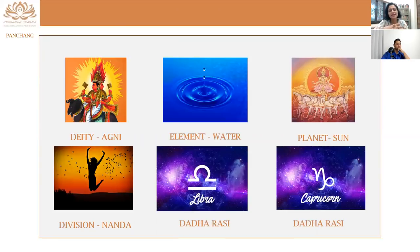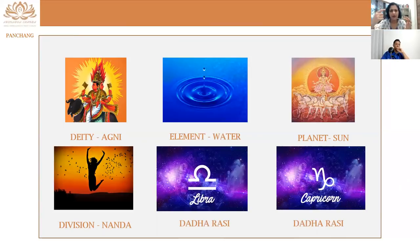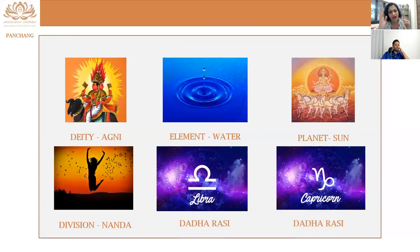Nanda is the division — there are five divisions: Nanda, Bhadra, Rikta, Puna, and Jaya. From Pratipada to Panchami, then again from Shashthi to Dashami, then Ekadashi to Amavasya or Purnima — this is one rotation each, three times in half a cycle, six times in total. These divisions are repeated.